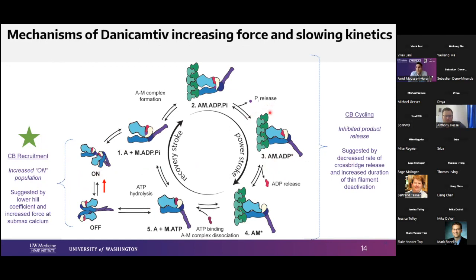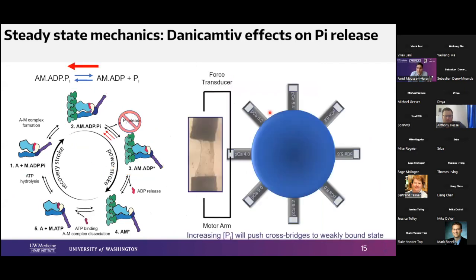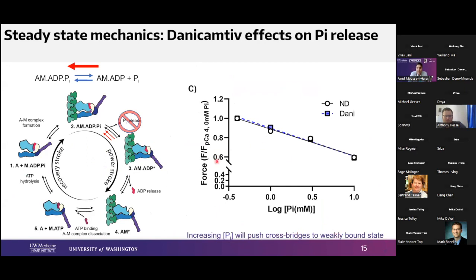We have successfully looked at cross-bridge recruitment and conclude we have more myosin in the on-state. Now moving to the cross-bridge cycling side, we first wanted to investigate whether the chemistry is similar to OM and affects phosphate release. We performed steady state force measurements with increasing levels of inorganic phosphate, which pushes the myosin cross-bridge to the weakly bound state. We did not see much of an effect — there was no difference when Danicamptiv was added. The interpretation is that Danicamptiv most likely does not impact phosphate release during the cross-bridge cycle.